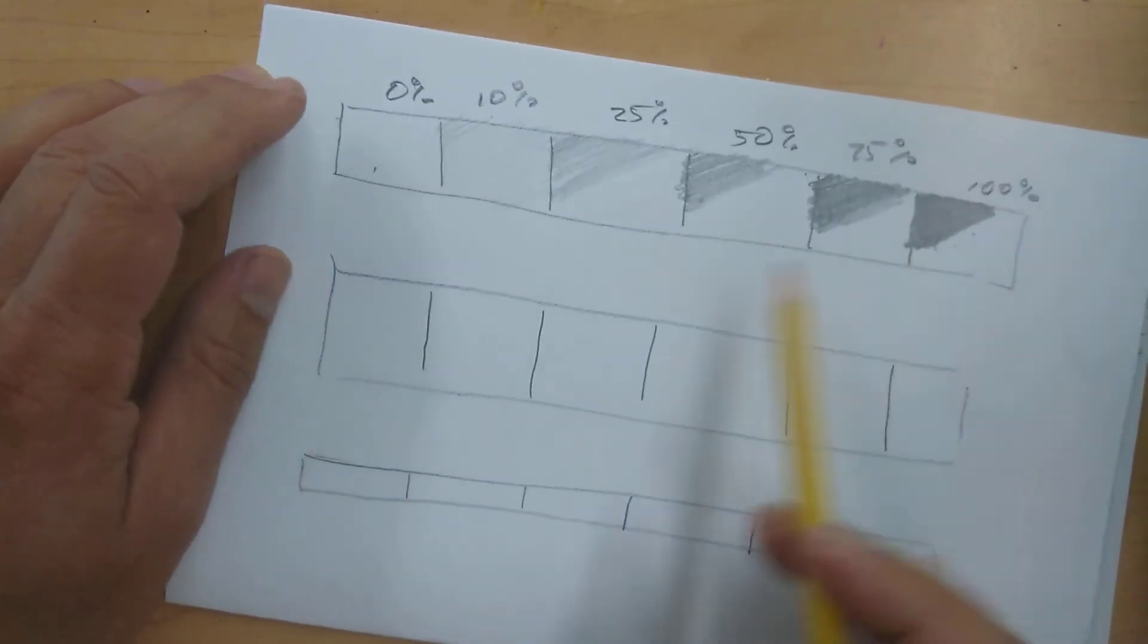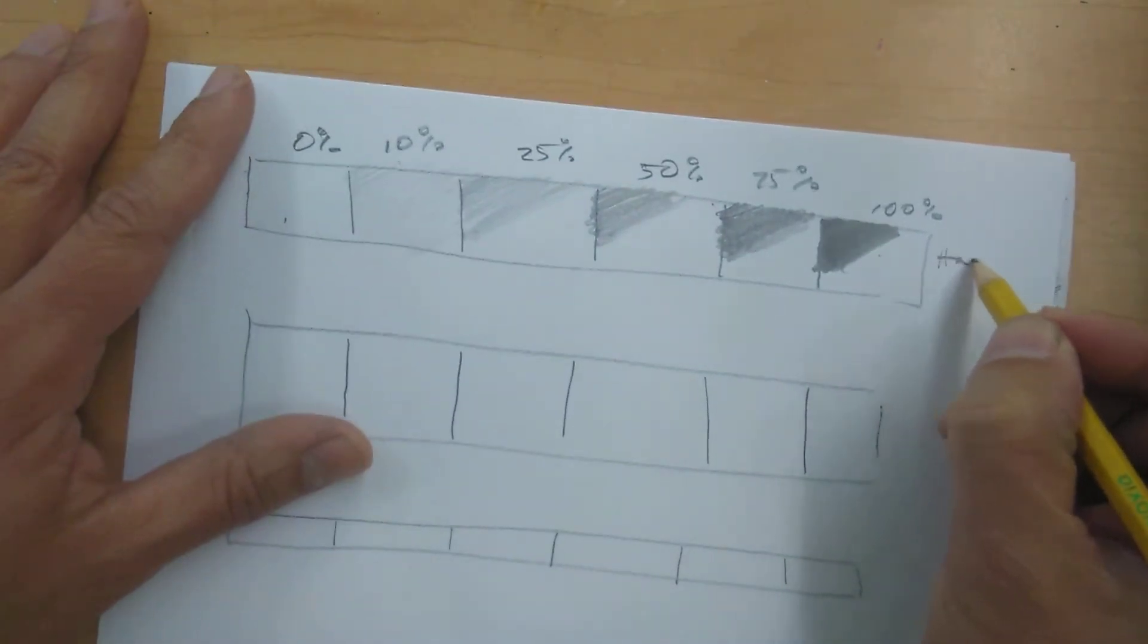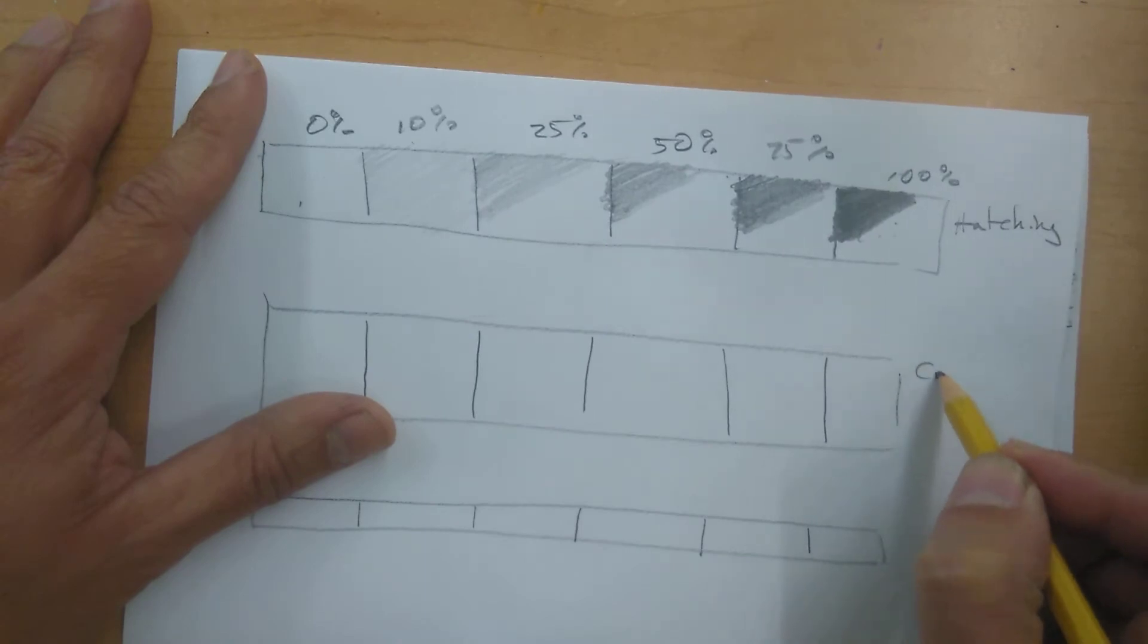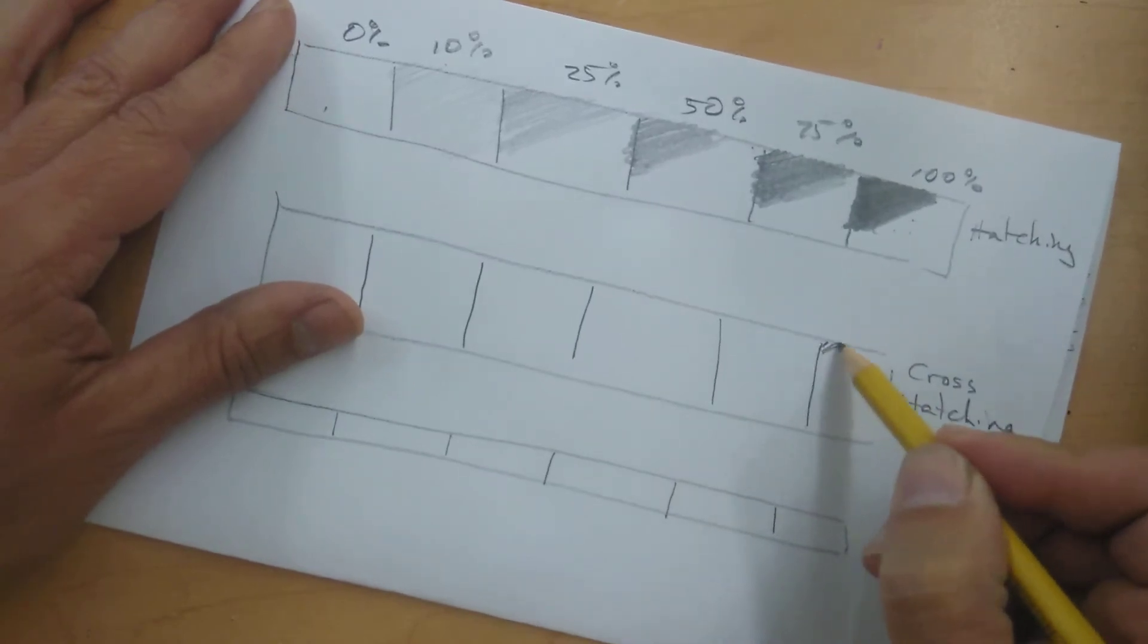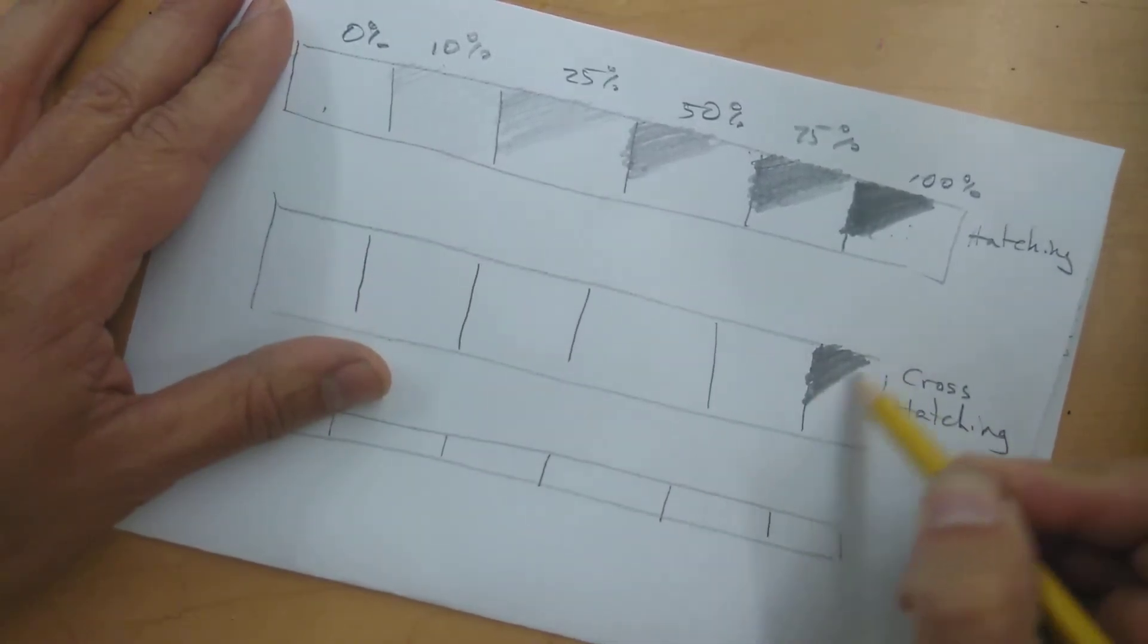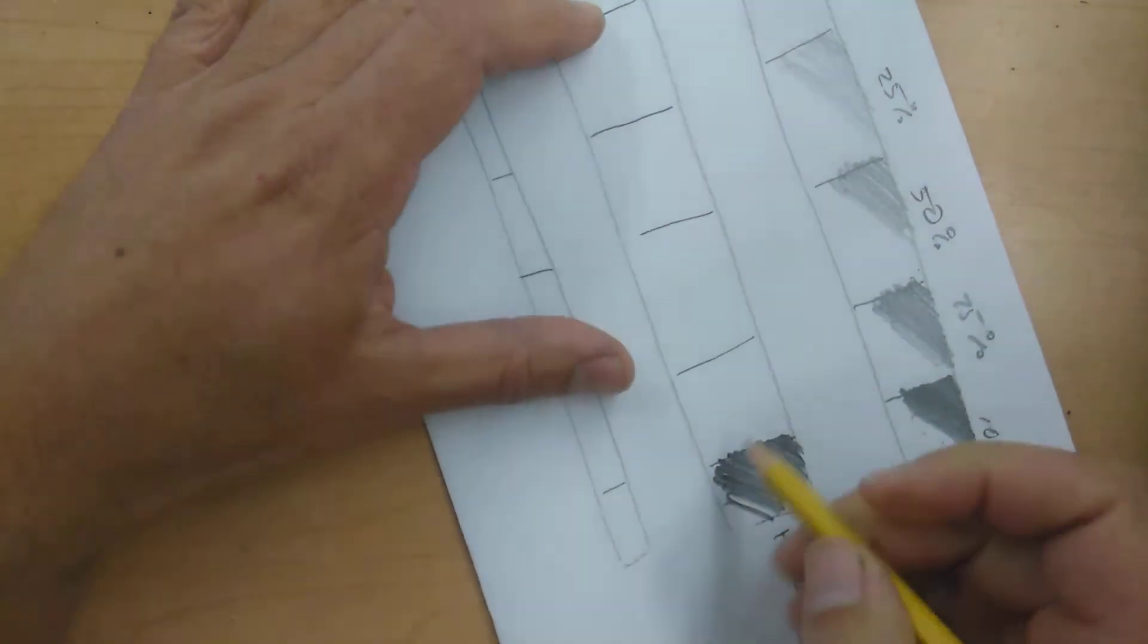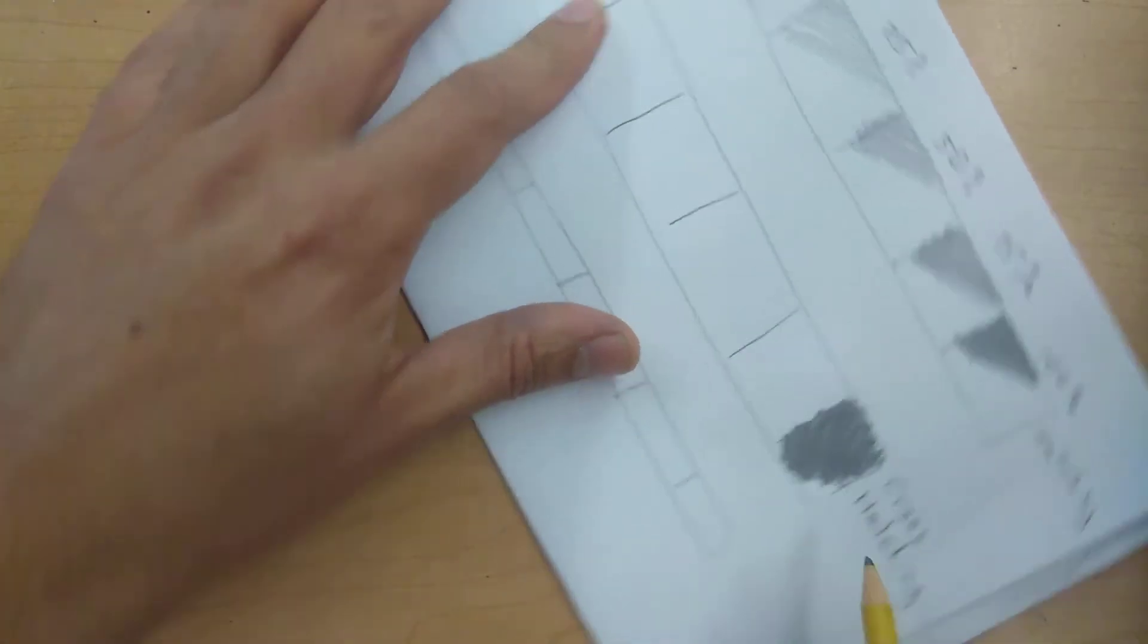Same thing. Whenever you go to do your value scale first, this one's going to be hatching. So we'll label it over here. Hatching. Next one is going to be cross-hatching. Same thing. Come over here with my hatch marks. Going as dark as I can. All the way across. Then I can either turn my wrist or turn my paper and go back over it the other direction. This is really good for those really dark areas. Cross-hatching.